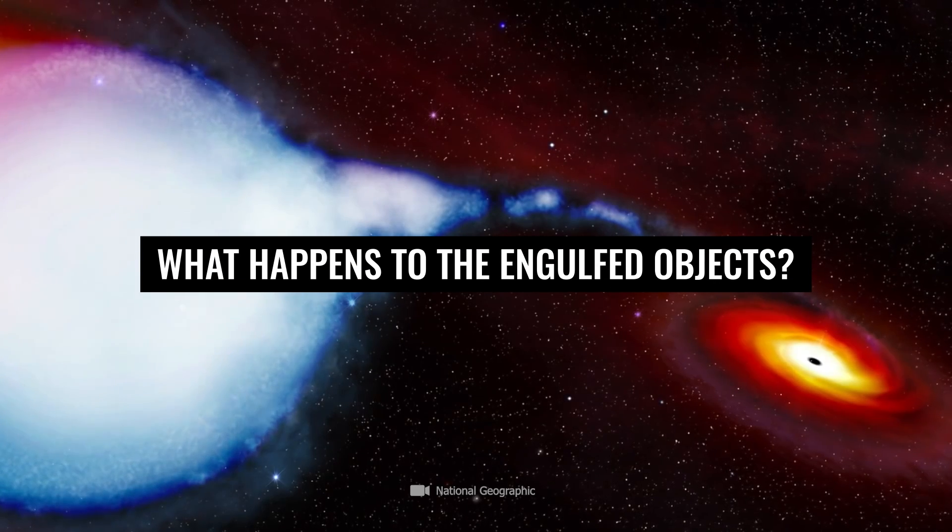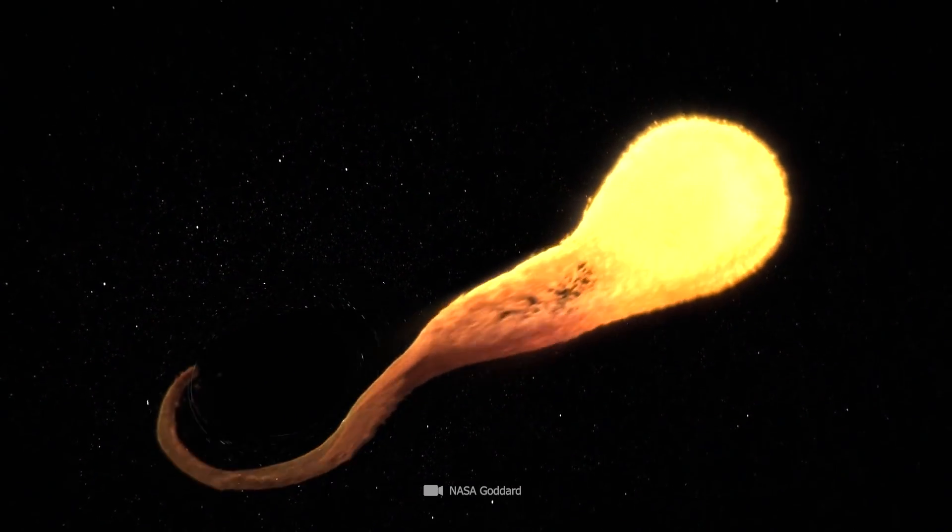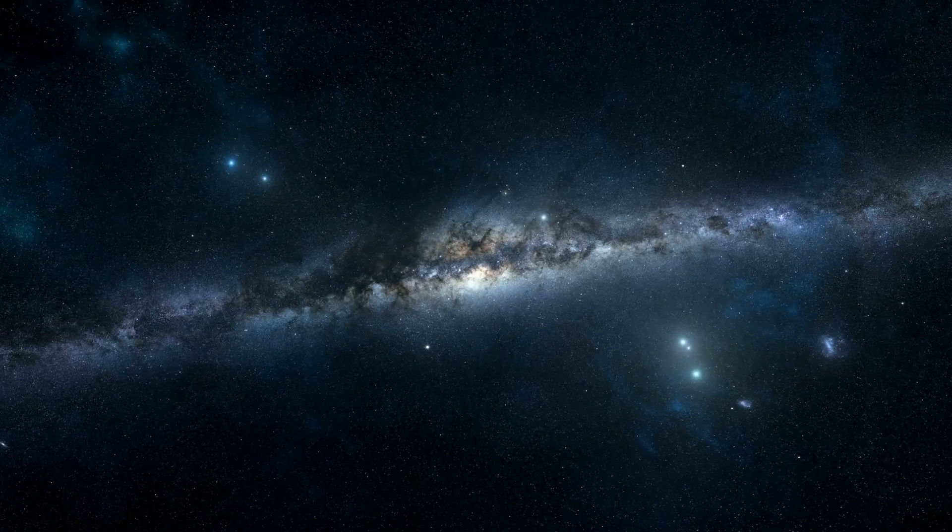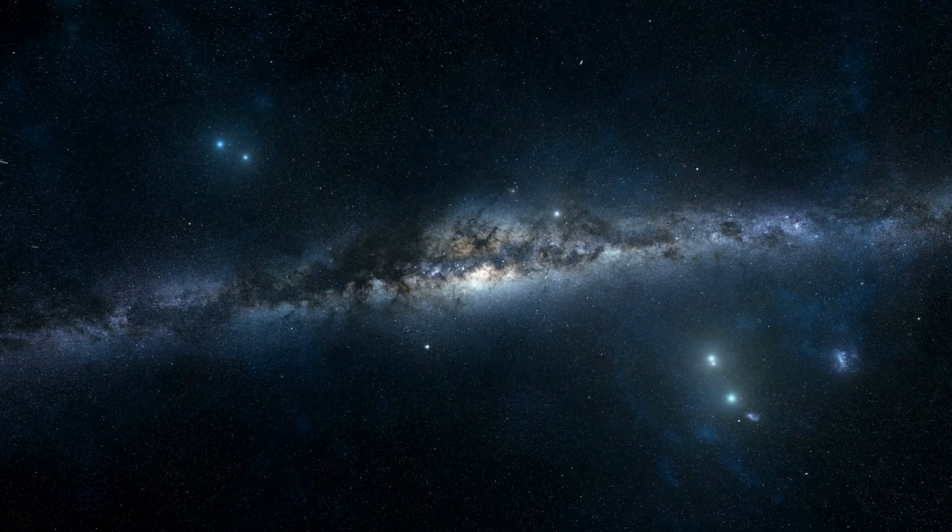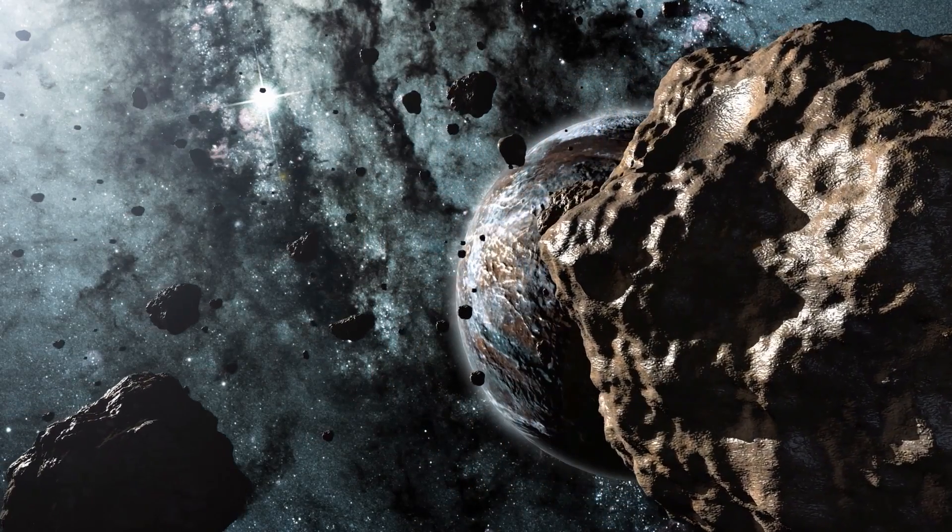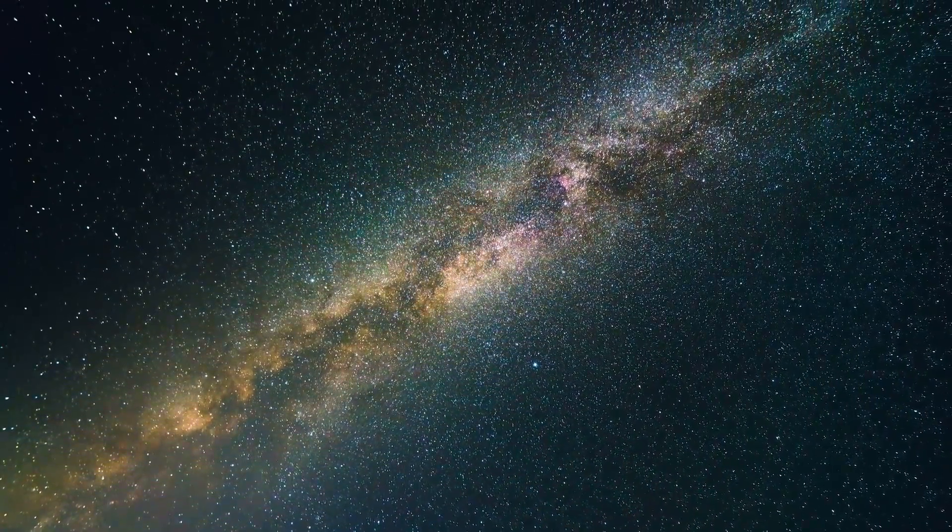What happens to the engulfed objects? At first it seems likely that all objects engulfed by a black hole would disappear irretrievably. However, if one closely follows the explanations of quantum physics, this is not really the case. This theory assumes that no existing information can ever completely disappear, but only be redistributed.